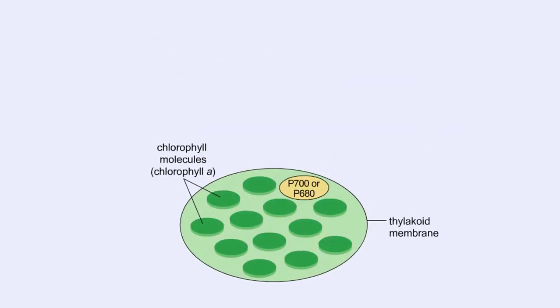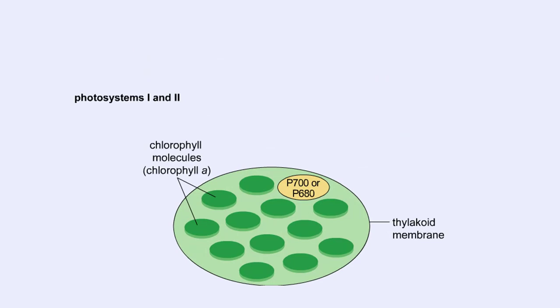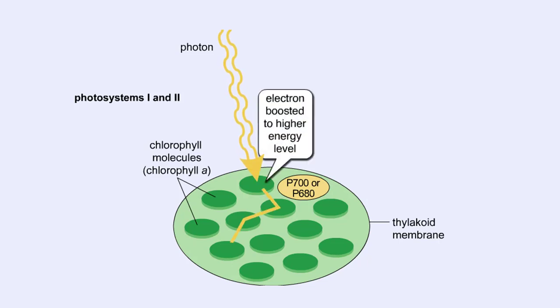Complexes of photosynthetic pigments are called photosystems. Plants contain two photosystems, photosystem I and photosystem II. The two photosystems trap light energy, which causes electrons from chlorophyll molecules to be excited to a higher energy level.